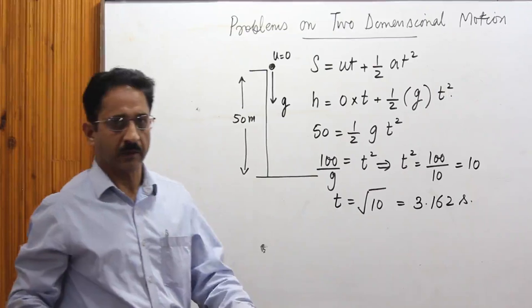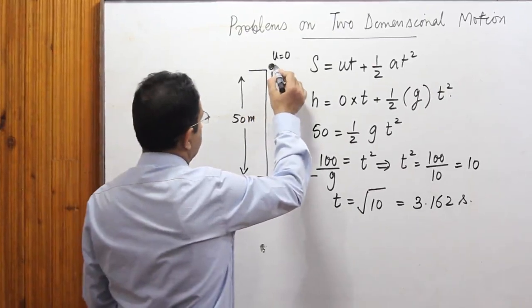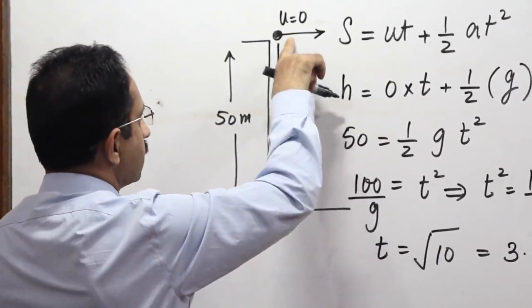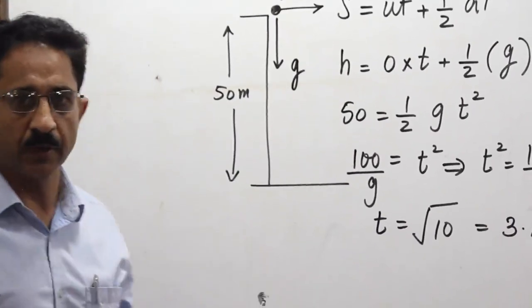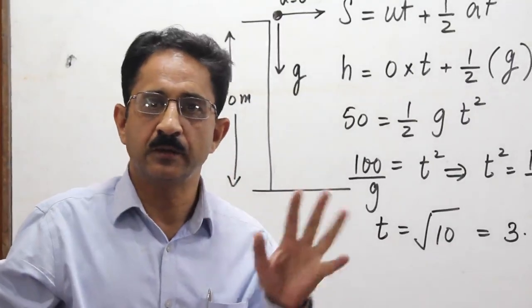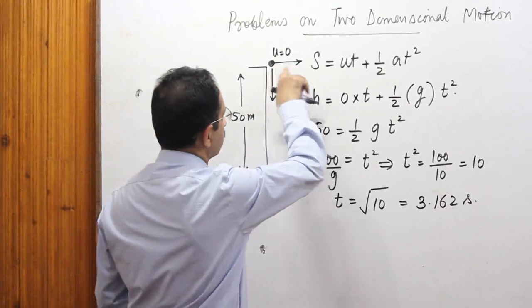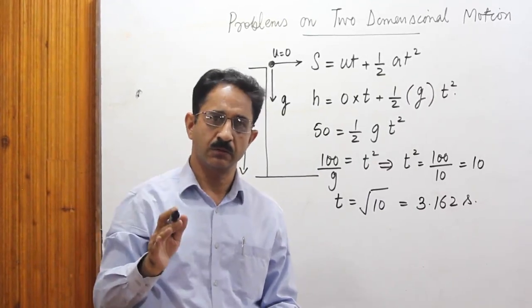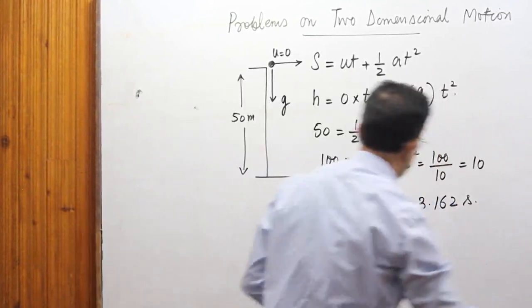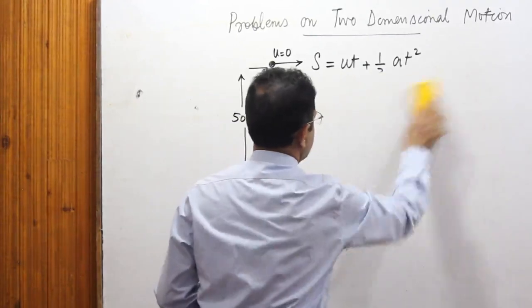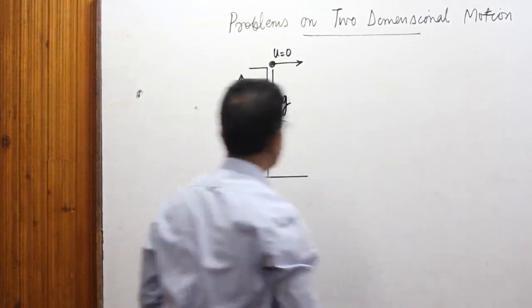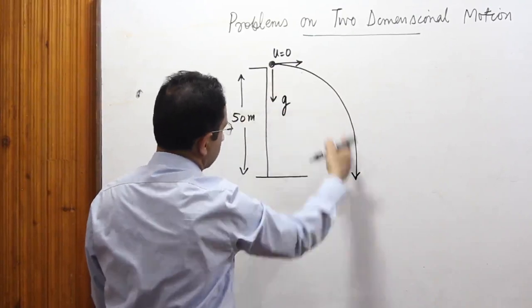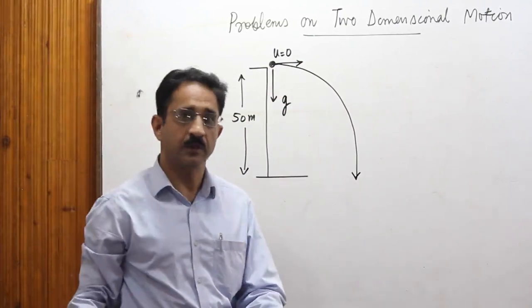If two bodies are dropped from one point with different initial horizontal velocities, the time taken to fall vertically will remain the same. When we give more horizontal velocity, the path changes, but the time of fall stays the same. This is because horizontal and vertical motions are independent of each other.